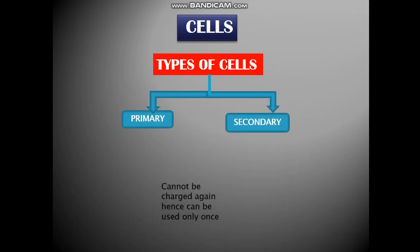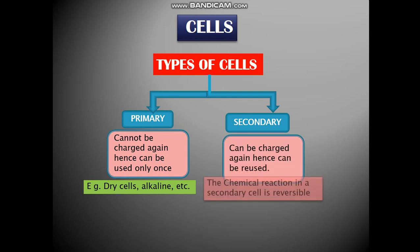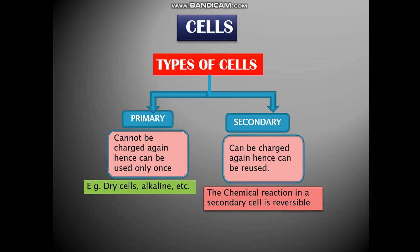The primary cells cannot be charged again, hence can be used only once. Examples include dry cells, alkaline cells, etc. The secondary cells can be charged again, hence can be reused. The chemical reaction in a secondary cell is reversible.